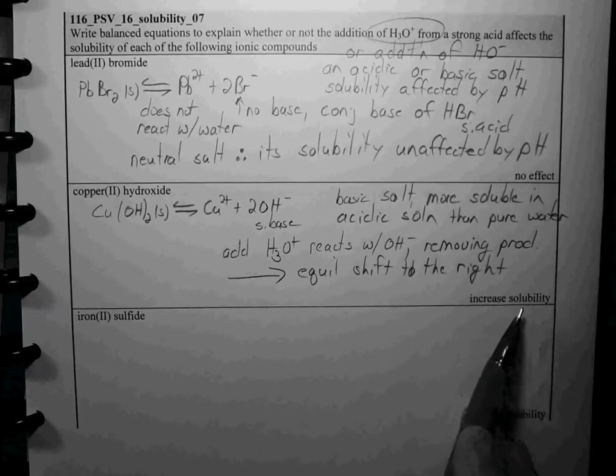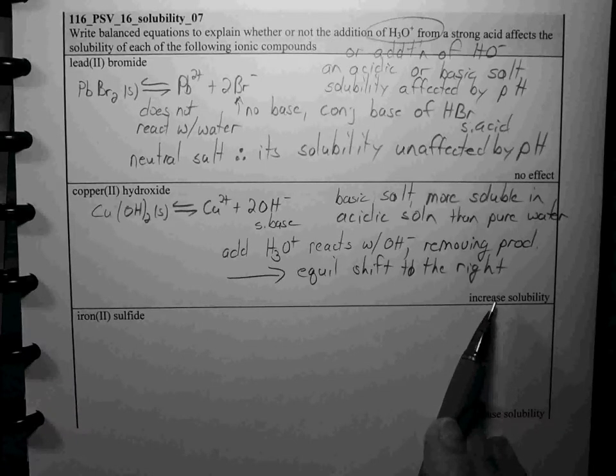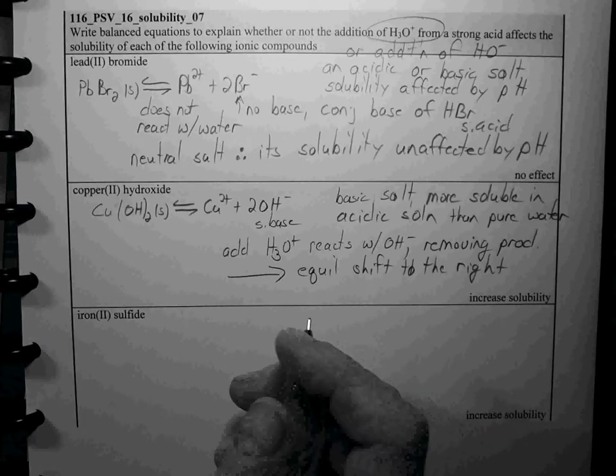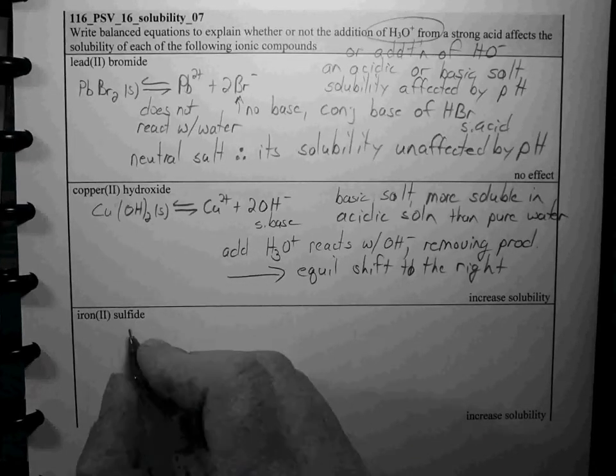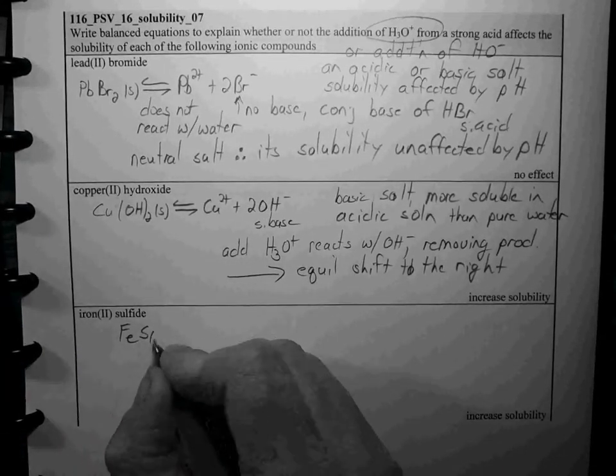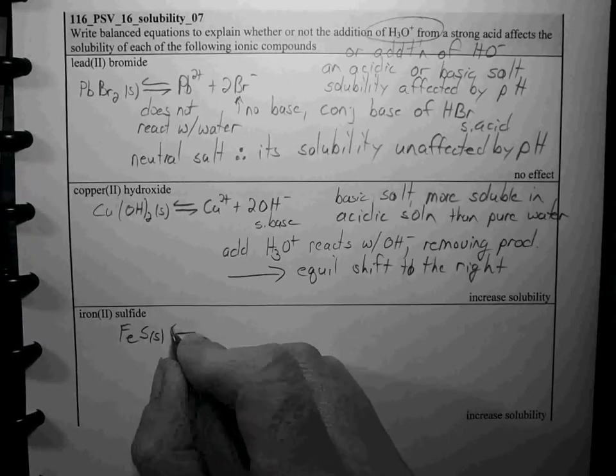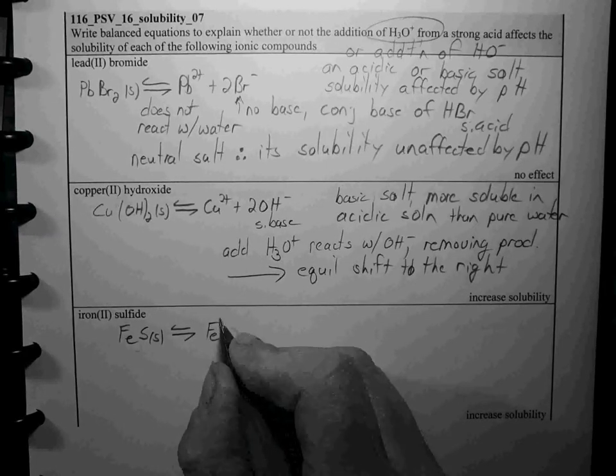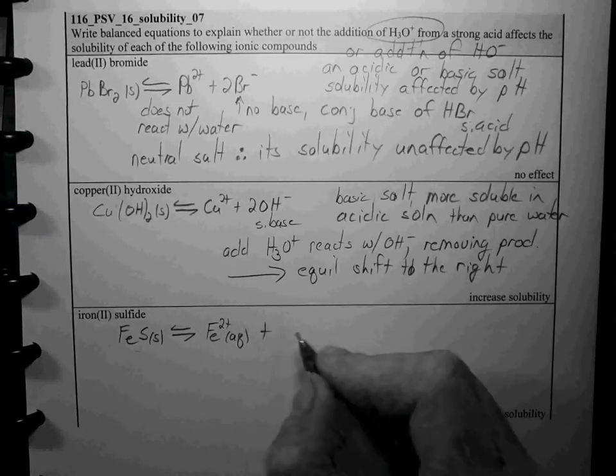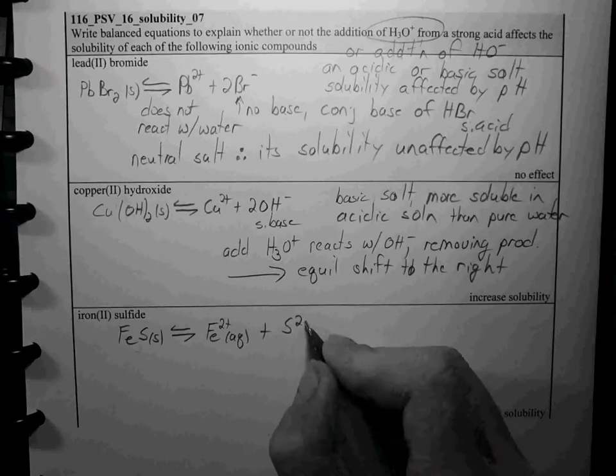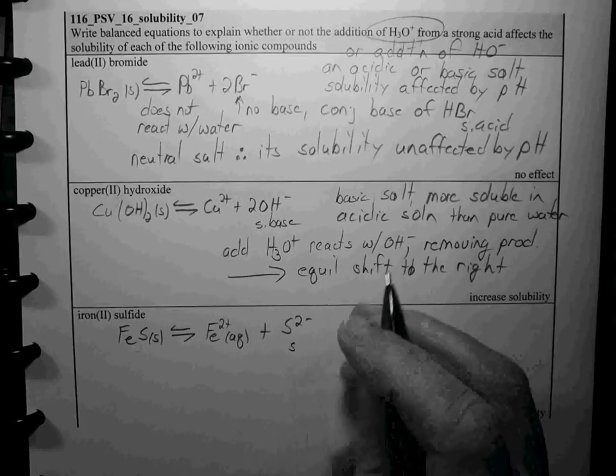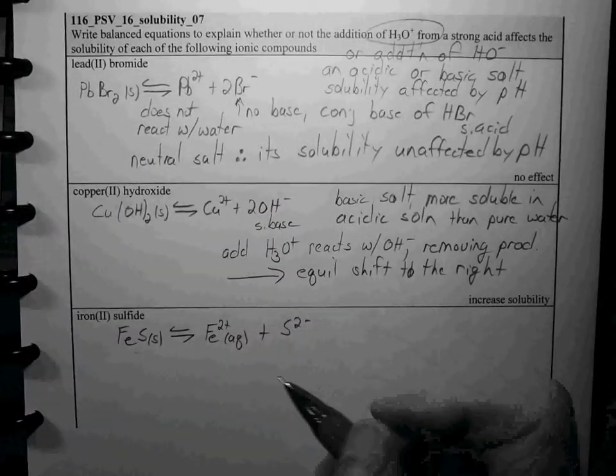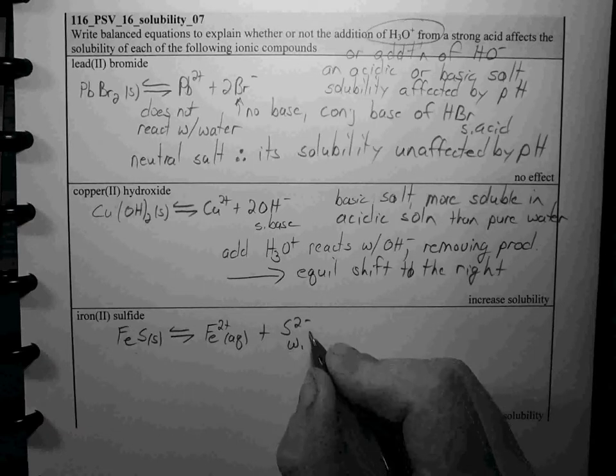So to answer our question, yes there is going to be an effect of pH on the solubility. Iron(II) sulfide, here's our formula. It will release Fe2+ and sulfide ions in solution. This is a fairly strong base, or it's not a strong base so we'll call it a weak base.